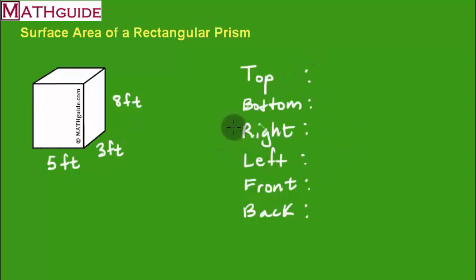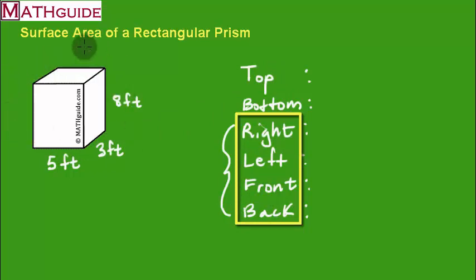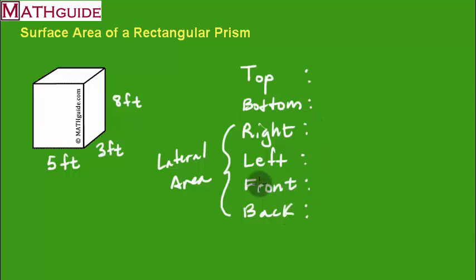Just for the record, if they ever say the lateral surface area, that means you want just the area of the faces that do not include the top and the bottom. In other words, just the sides that go around the figure, not the top and the bottom. Okay, that would be called the lateral, lateral area. Or sometimes it's called the lateral surface area. Okay, let's calculate the lateral surface area and then we'll talk about the top and bottom.